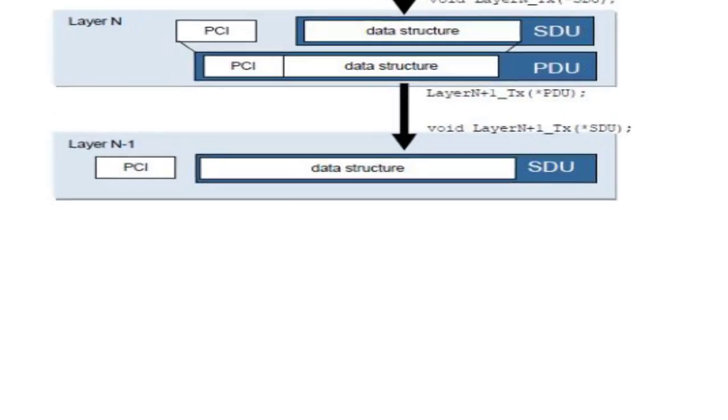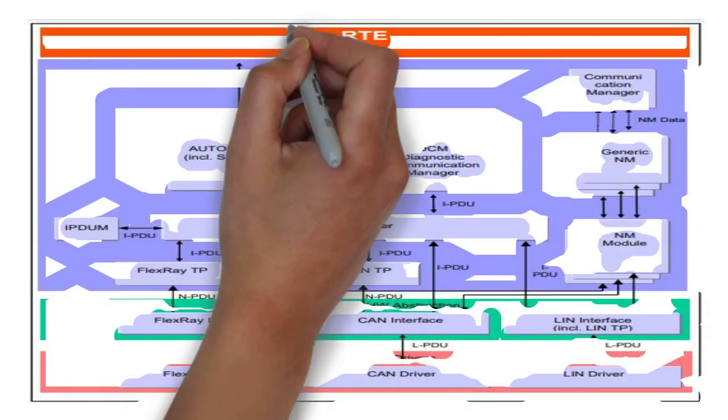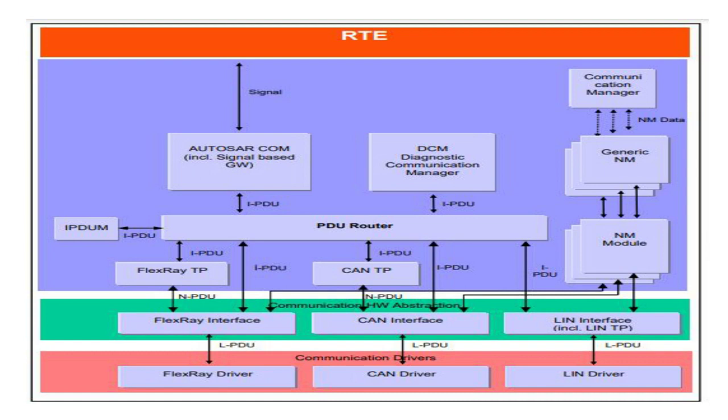In a similar manner, a signal is added with each layer's header and sent out to the next layer. All PDUs in the service layer are called IPDUs. Once the protocol data unit moves from the service layer to the ECU abstraction layer, these signals are called NPDUs — network PDUs. Once this network PDU reaches the MCU or hardware abstraction layer, we call it LPDU — low level PDU.